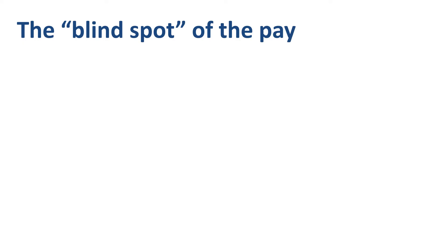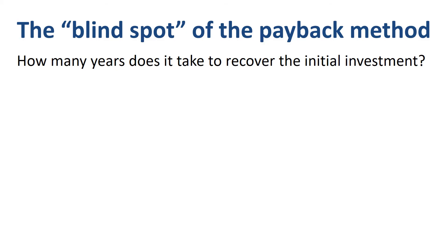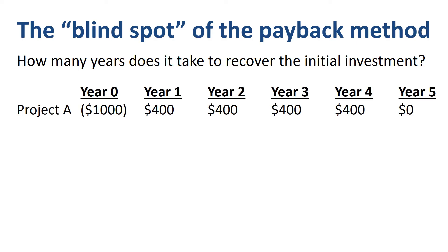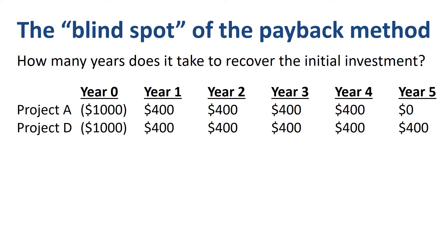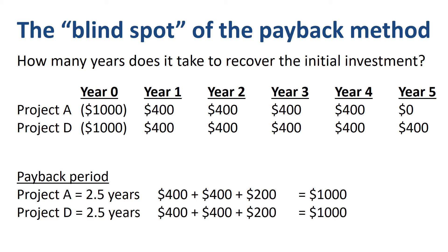However, the payback method, while nice and simple, has a crucial blind spot. It answers the question: how many years does it take to recover the initial investment? Nothing more, nothing less. So if project A has an investment of $1,000 and 4 years of $400 benefits per year, and project D has an investment of $1,000 with 5 years of $400 benefits per year, the payback method tells you that both projects are equally attractive at a payback period of 2 and a half years.